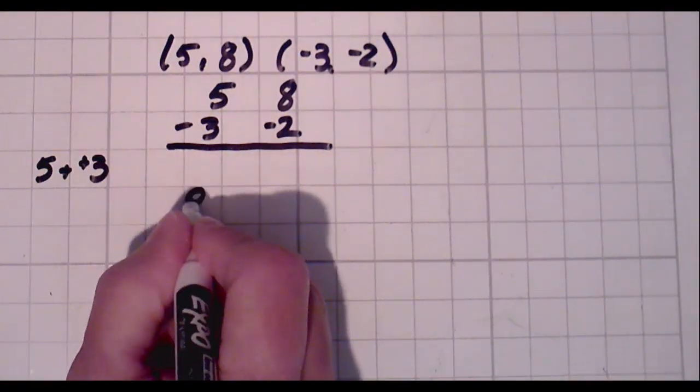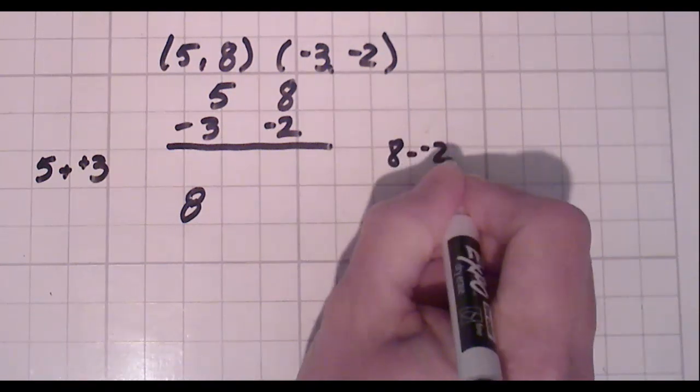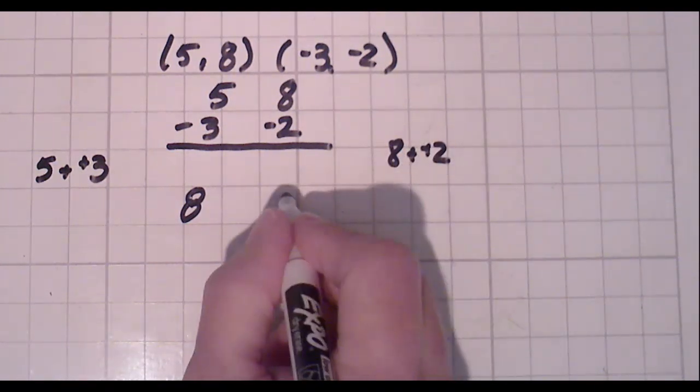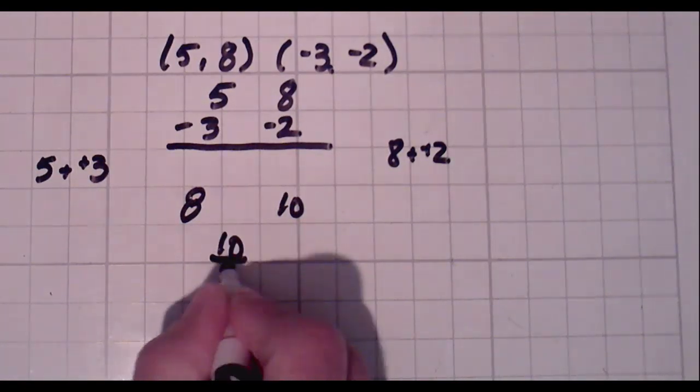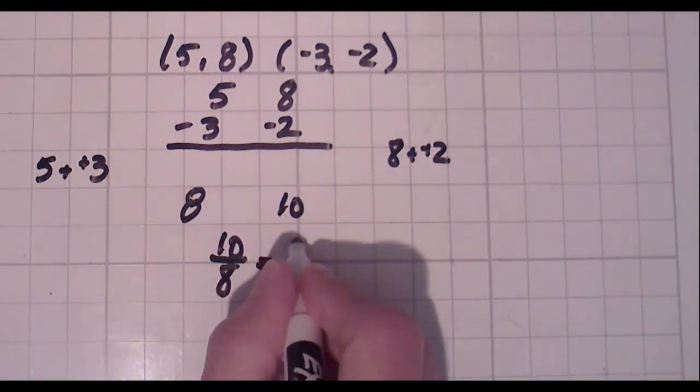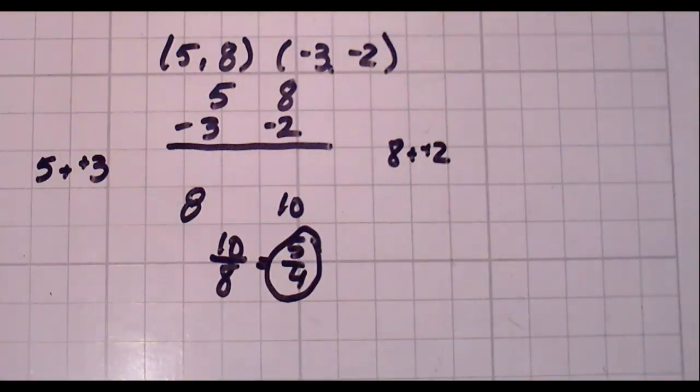8 minus negative 2. That's a 10. Second number over first number. And I can actually reduce that to 5 over 4. My slope is 5 over 4.